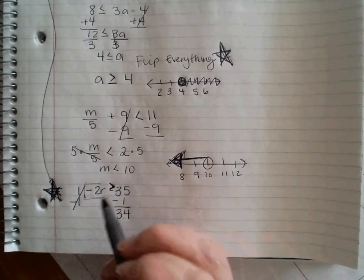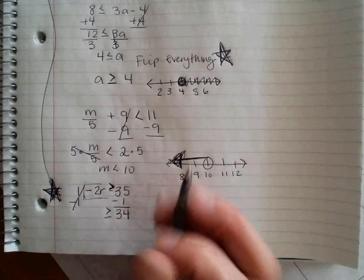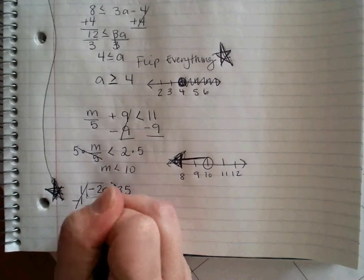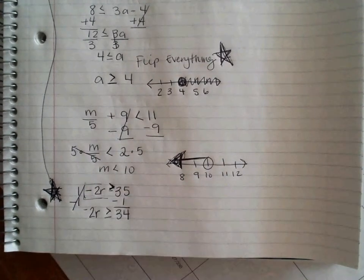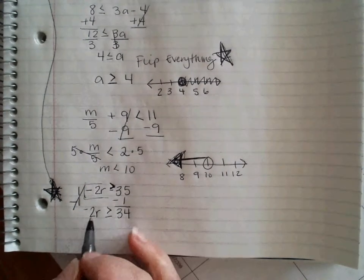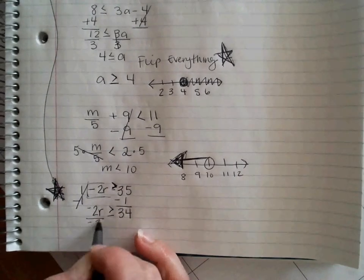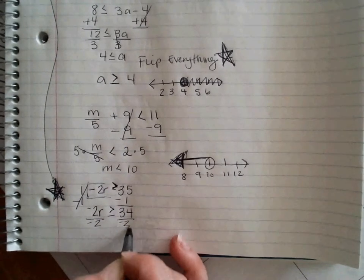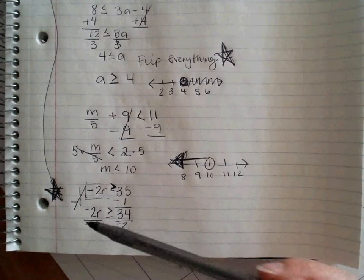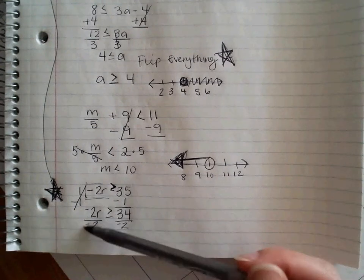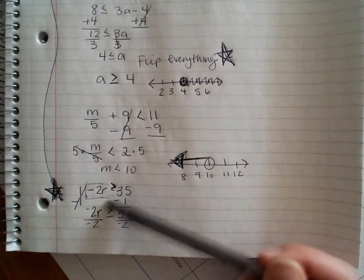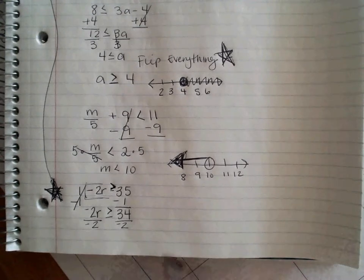So 35 minus 1 gives me 34. I'm going to bring everything else down. So my greater than or equal to, and this minus sign, I haven't used it yet, so it becomes a negative 2R. I'm going to divide by negative 2 on both sides. When I do that, this negativity is going to flip. It's going to flip this symbol.